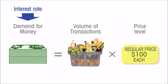Another determinant — still important — is the rate of interest. For any given volume of monthly transactions, you can finance that by going to the bank once for the month and withdrawing everything you need, in which case your demand for money is large. Or you can go to the bank once a week — four times for the month — withdrawing only what you need at a time, in which case your demand for money is less. That's influenced by the interest rate: if rates are high, you want to leave your money in an interest-earning account as long as possible, so you go to the bank more frequently.